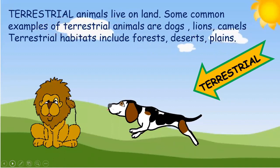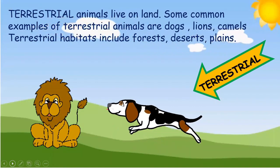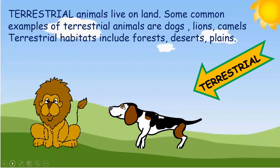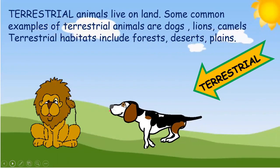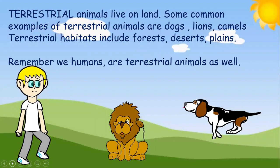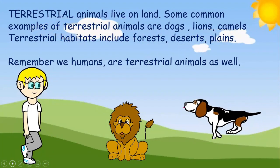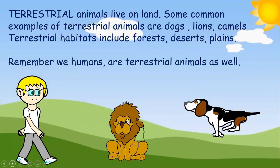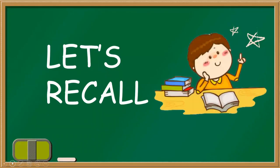Terrestrial animals live on land. Some common examples of terrestrial animals are dogs, lions, and camels. Terrestrial habitats include forests, deserts, and plains. Remember, we humans are terrestrial animals as well!